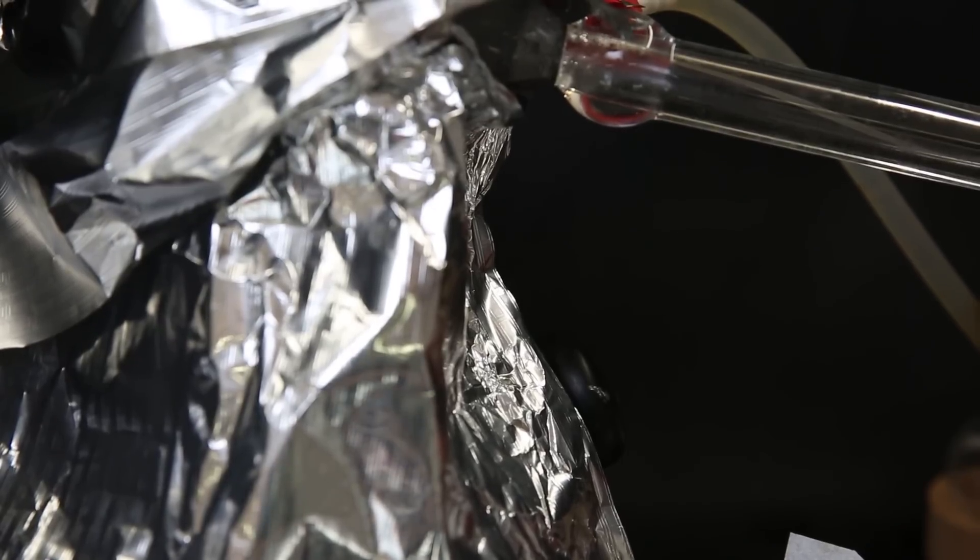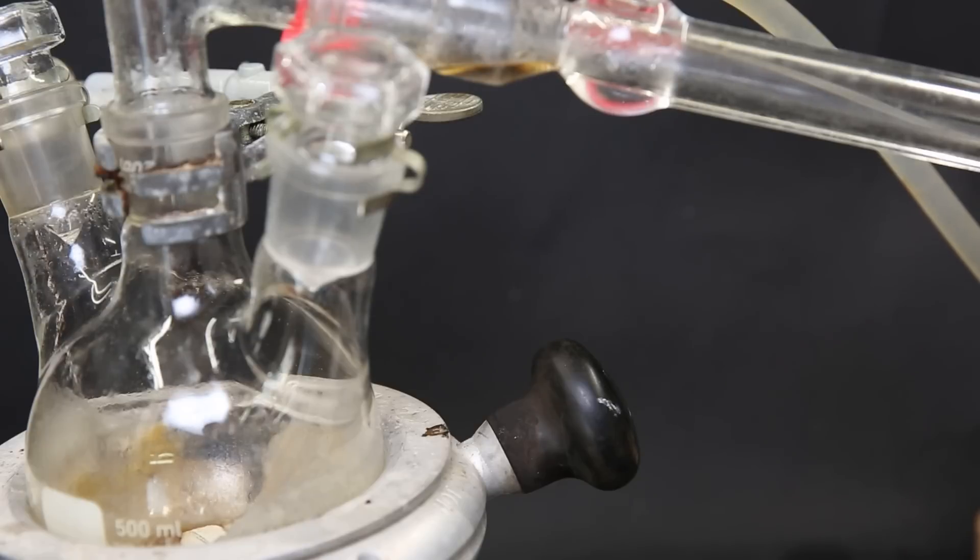Since it has a relatively high boiling point, I increase the temperature to 300°C and insulate it with aluminum foil. Since 18-crown-6 has a tendency to supercool, it will stay a liquid and flow through the condenser even if the temperature is below its melting point. After a while, nothing more came over and some brown liquid is left behind. In the receiving flask, we have the crude 18-crown-6.